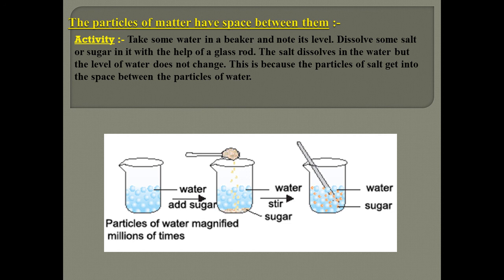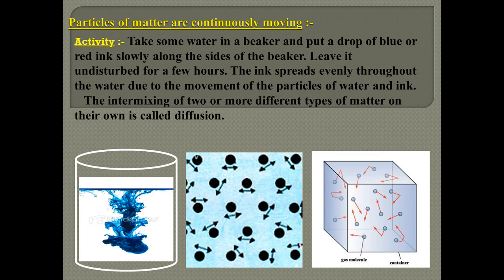Third: particles of matter have space between them. We take a beaker with 100 ml of water and add sugar or salt crystals. The level of the water does not rise after adding the salt. After stirring with a glass rod, the sugar or salt occupies the space between the water molecules. The orange balls represent sugar molecules and blue balls represent water molecules, showing that there is space between water molecules.